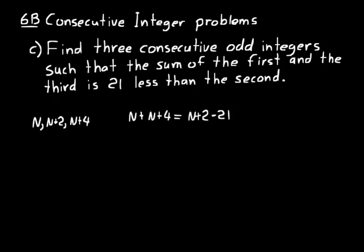Now we can go ahead and solve this for n. And so on the left, we would simplify to 2n plus 4. And on the right, we would simplify to n minus 19.